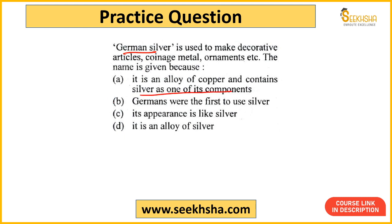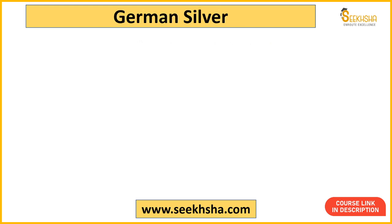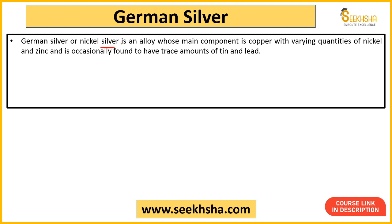Answer option C hai - just because iski appearance silver ki tarah hoti hai isliye isko German silver bola jaata hai. Iska silver se koi lena dena nahi hai - 1% bhi silver content nahi hota German silver ke andar. German silver ko nickel silver bhi kehte hain. Yeh ek alloy hai jisme copper, nickel, aur zinc hota hai - sometimes tin aur lead bhi add kiya jaata hai. Toh nickel plus copper plus zinc - yeh yaad rakhna hai agar question puche ki German silver kin metals ka alloy hai.